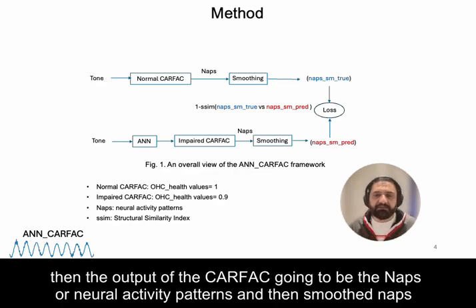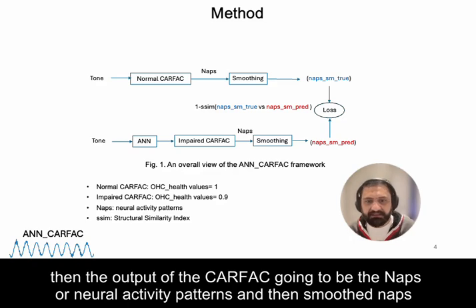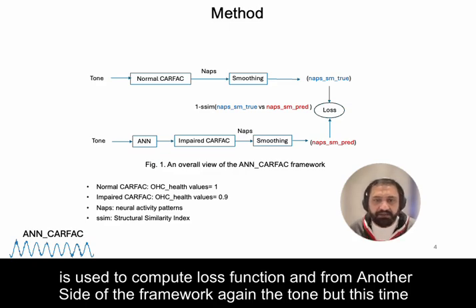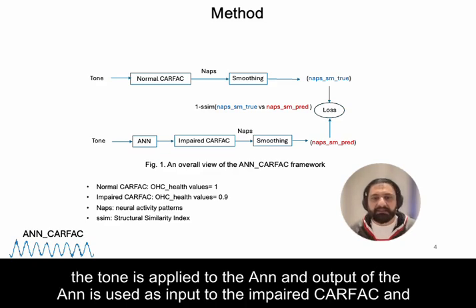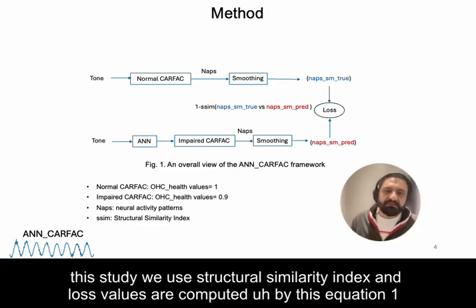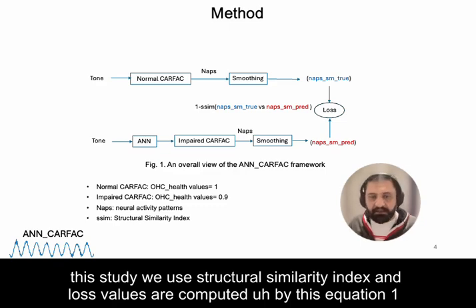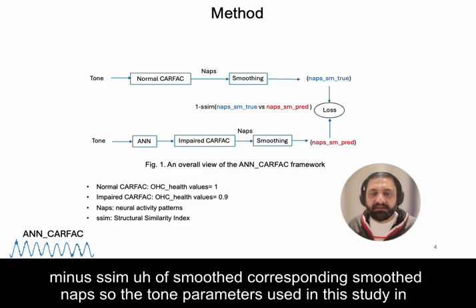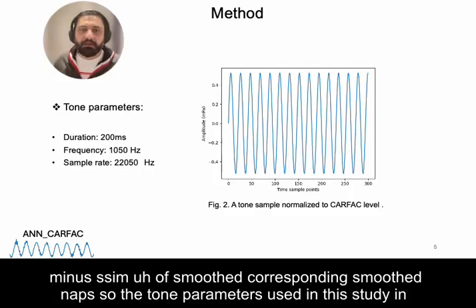A tone is applied as input to the normal CARFAC, and the output is the NAPs — Neural Activity Patterns. The smoothed NAPs are used to compute the loss function. From the other side of the framework, the same tone is applied to the ANN, and the ANN output is used as input to the impaired CARFAC. Smoothed NAPs from this path also feed into the loss function, which is computed as 1 minus the SSIM of the corresponding smoothed NAPs.